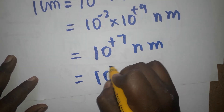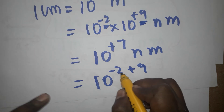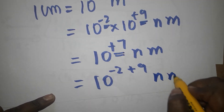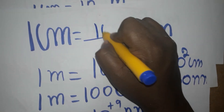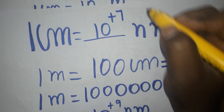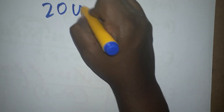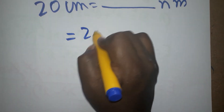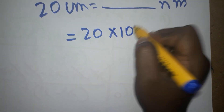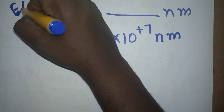Because 10 power minus 2 multiplied by 10 power 9 means we just add the exponents: minus 2 plus 9 equals plus 7. So finally, one centimeter is equal to 10 power 7 nanometers. As an example: 20 centimeters equals 20 multiplied by 10 power 7 nanometers. Thank you for watching my video.